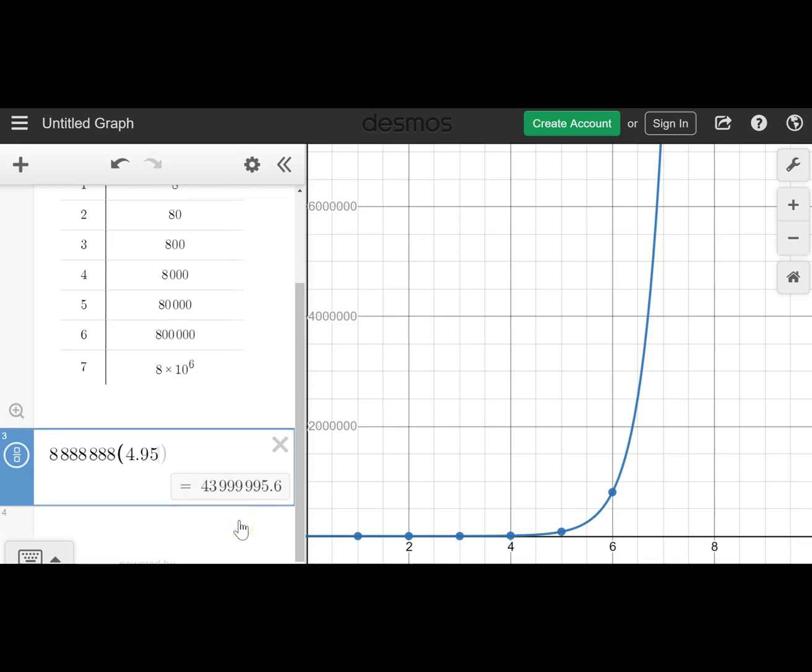So Bill is going to spend a whopping $43,999,995.60 on this promotion. So almost 44 million. So I would advise Bill to change it to a BOGO promotion so that if his profit margins are high enough, at least he's going to be making some money off all these people that are coming to his ice cream shop. He's also going to need a really big ice cream shop.